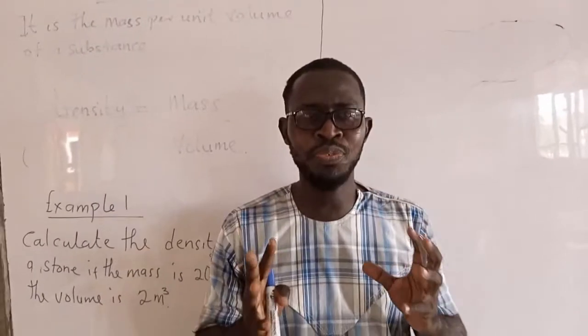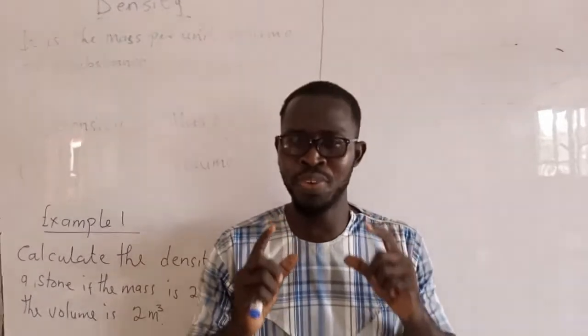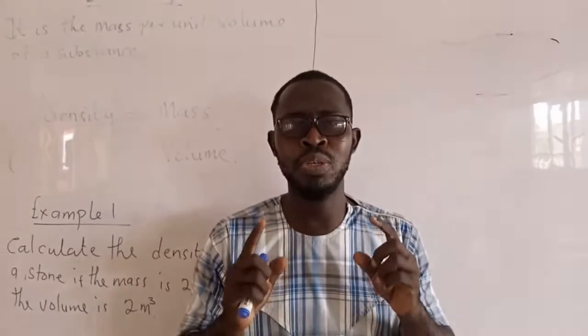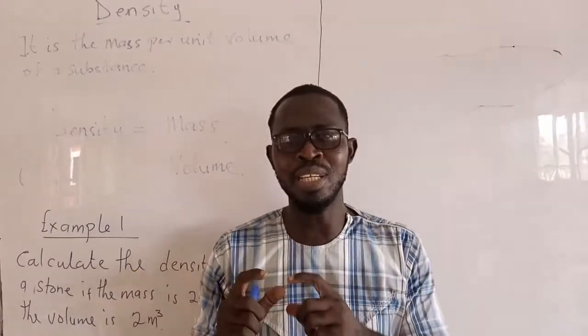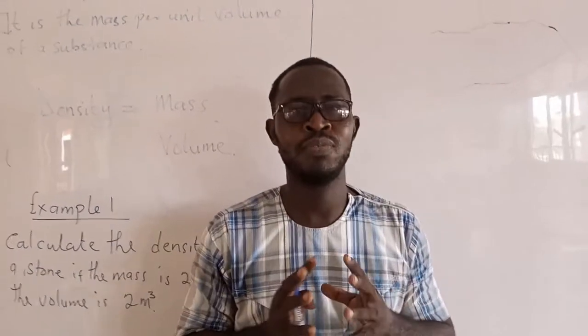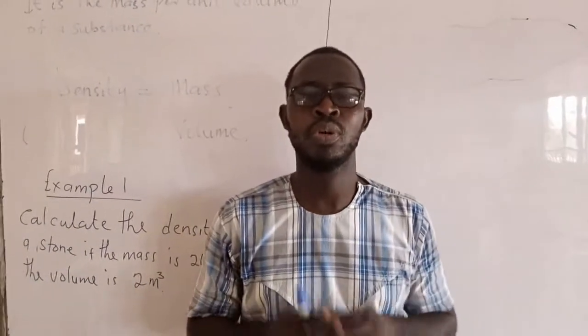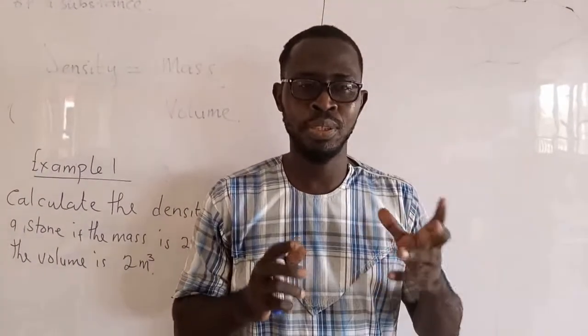So your first formula you are going to keep, if you have not kept any formula, your first important formula you are going to keep is density. Density equals mass over volume. And then the unit is kilogram per meter cube or gram per centimeter cube.